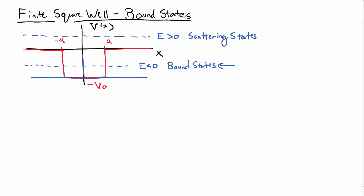Let's first begin by guessing what this is going to look like — what a bound state might look like. So the wave function psi might look something like this. The wave function will be matched at the boundary of the finite square well. It'll be continuous and its derivatives will be continuous.